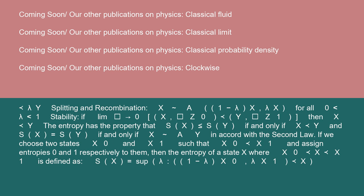The entropy has the property that S(X) less than or equal to S(Y) if and only if X precedes Y, and S(X) equals S(Y) if and only if X tilde operator a Y, in accord with the second law.